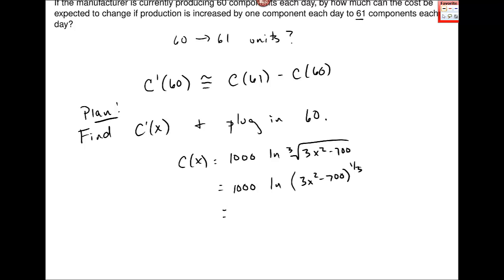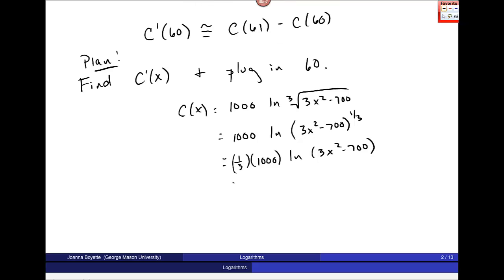Now it's also true with logs that this can come out front and I can get 1 third times 1,000 times natural log of just this and that makes my life much simpler. And I'll simplify this as just 1,000 over 3 natural log of 3x squared minus 700.